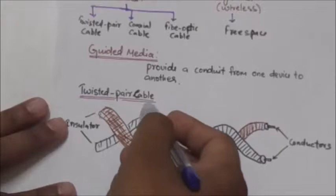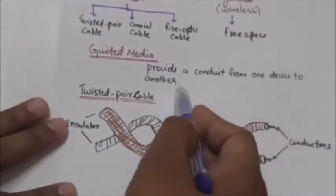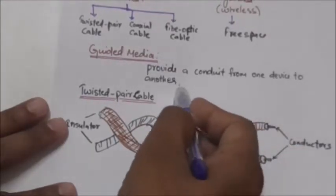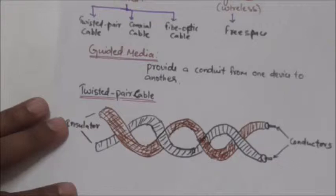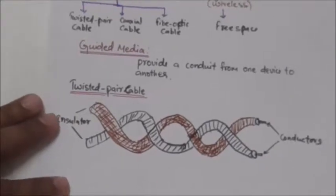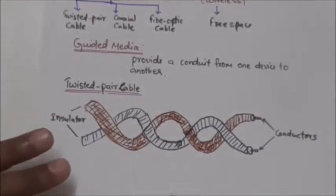Guided media are those which provide a conduit from one device to another. Guided media include twisted pair cable, coaxial cable, and fiber optic cable. The signal traveling along any of these media is directed and contained by the physical limits of the media. Now first of all we will study about twisted pair cable.